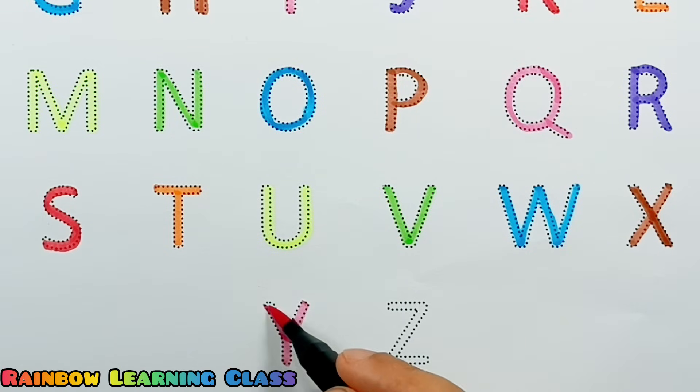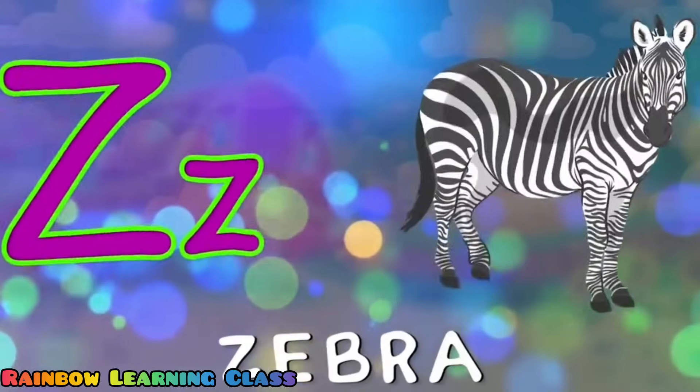A, B, C, D, E, F, G, H, I, J, K, L. Z is for zebra.